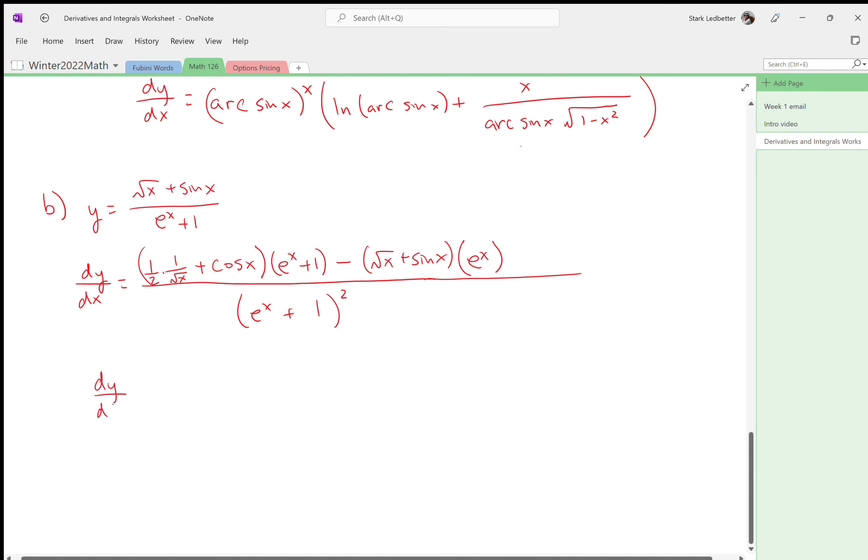Yeah, here's where, like, yeah, that's correct, but a little bit of simplifying might go a long way. Like, I don't like fractions in fractions. We won't take off points if you do this, but if you multiply top and bottom by two root x, it just looks so much better.